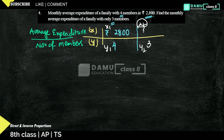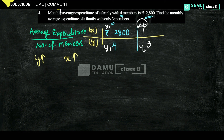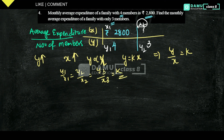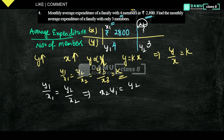If average expenditure increases, the number of people increases, so y is directly proportional to x. Removing the proportional symbol: y = kx, so y by x equals constant k. Therefore y1/x1 = y2/x2 = y3/x3, and so on. To find x2: from y1/x1 = y2/x2, cross-multiplying gives x2 times y1 = y2 times x1, so x2 = y2 times x1 by y1.